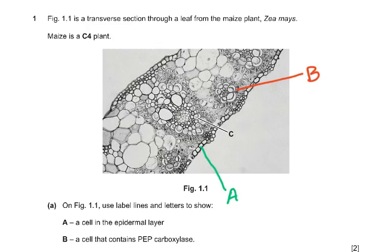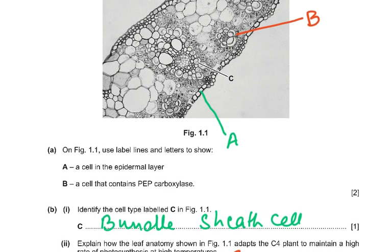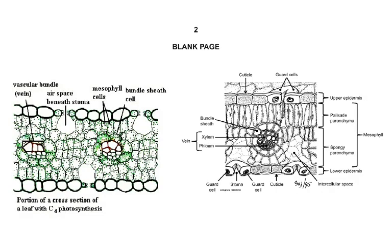Let's start the first question, which is very interesting because it asks you about C4 plants. Maize is a C4 plant. Question 1, figure 1.1 shows transfer sections of a leaf from the maize plant. On figure 1.1, use label lines and letters to show: A, a cell in the epidermal layer; and a cell that contains PEP carboxylase.